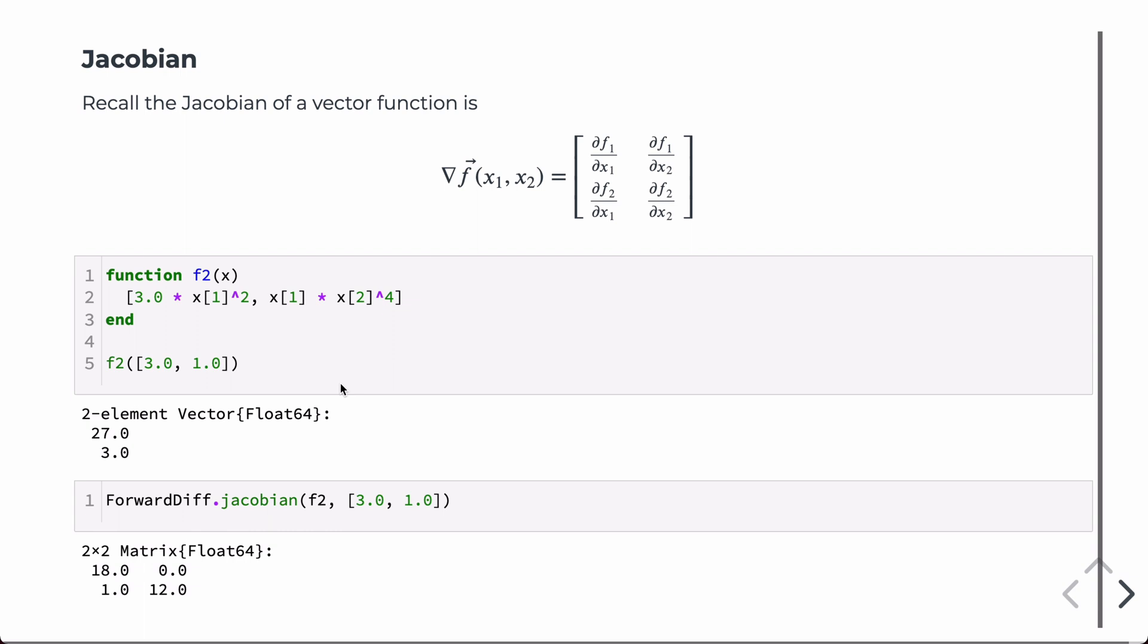For both gradient and Jacobian, even though I'm not showing them, there's all the same in place variations that I showed for derivative. So it can take in place functions. It can also do the operation, store the derivative values in place as well by using the exclamation point variations of both gradient and function.